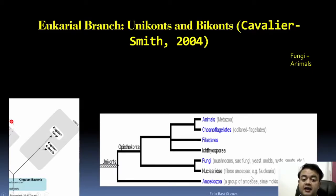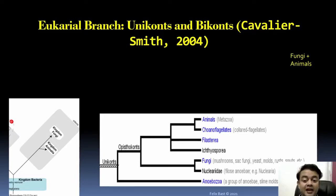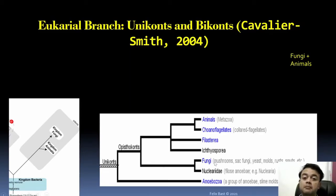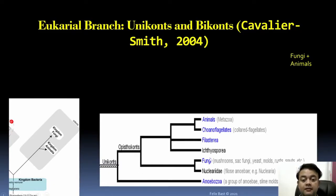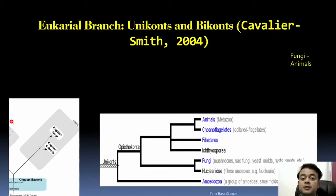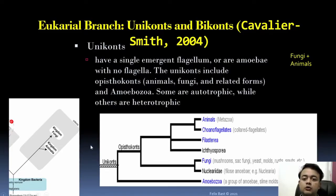Unikonts have a classical association with botany because fungi were historically considered half plant and half animal. That is why fungi and mushrooms are taught in botany syllabi, but this is actually inaccurate. In the current phylogenetic classification system, fungi are far more similar to animals than to plants. So Unikonts represent a major division among eukaryotes, with fungi being closely related to animals.